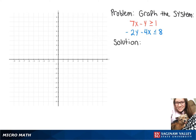We're going to graph this system of inequalities. So we'll start by looking at our red one and our first step is going to be to subtract the 7x over, which leaves us with negative y is greater than or equal to 1 minus 7x. Then we're going to divide by negative 1 and notice that flips the sign. So now we have y is less than or equal to 7x minus 1.